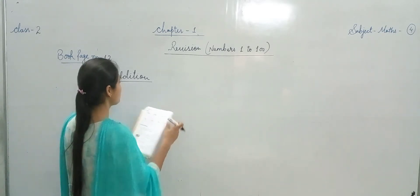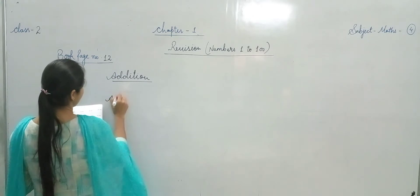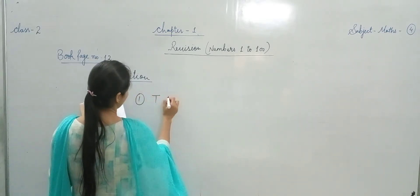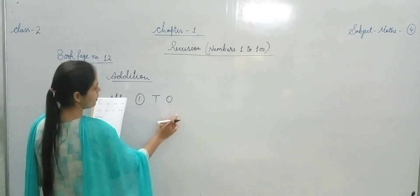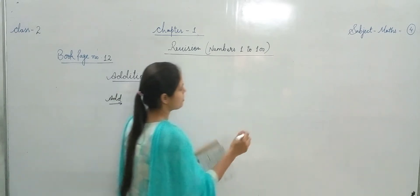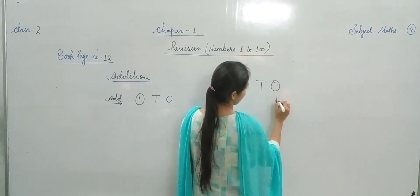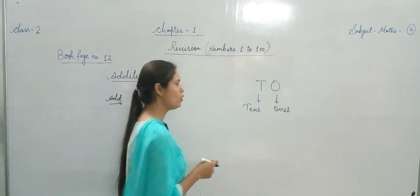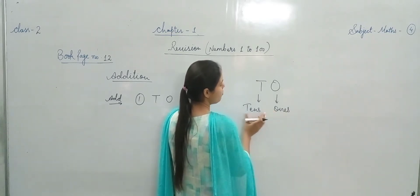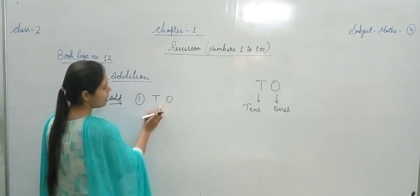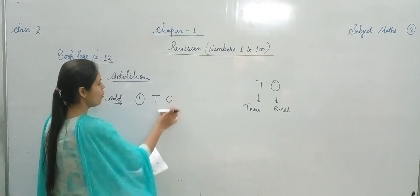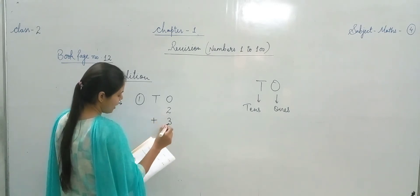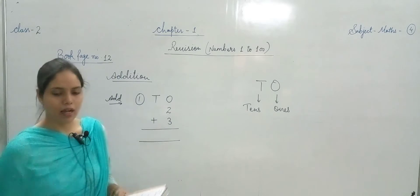Aaj hum aapko explain karenge — add karna numbers ko. Addition aapka main heading hai, numbers add karenge. Pehle hain columns draw karate hain — Ones column and Tens column. O means Ones and T means Tens. We have T and O — two columns drawn, and numbers and digits are properly written in the box. O वाले column में numbers लिखे हैं 2 and 3, और T वाले column में sign of addition लगा है। Simply two numbers हैं, आपको इन्हें add करना है।